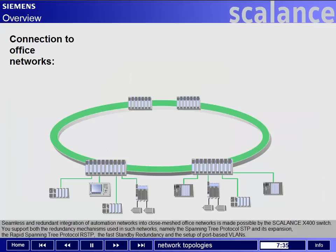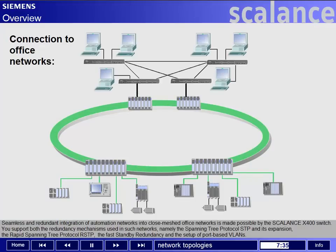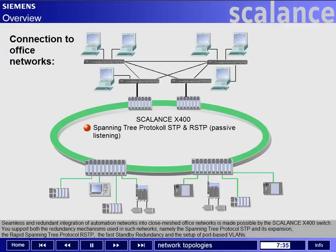Seamless and redundant integration of automation networks into close-meshed office networks is made possible by the Scalance X400 switch. It supports both the redundancy mechanisms used in such networks — namely the Spanning Tree Protocol (STP) and its expansion, the Rapid Spanning Tree Protocol (RSTP) — and the setup of port-based VLANs.